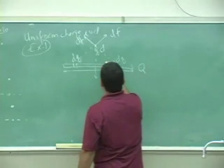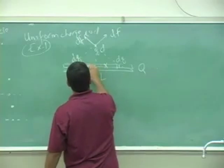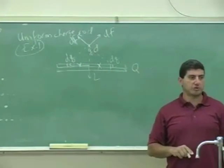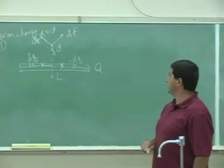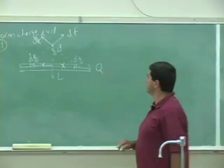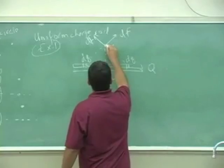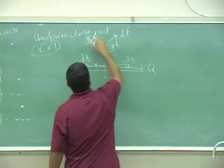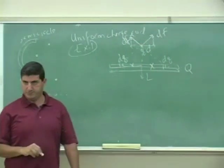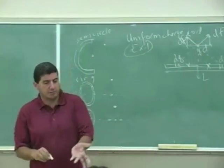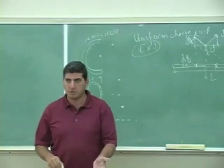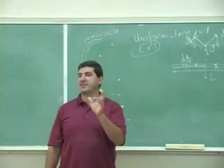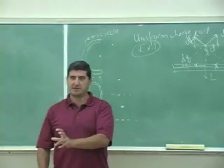Now if this distance is x and if this distance is also x, if they're equidistant, what do I know about the x component of df and the x component of the other df? Since it's symmetrical, the x components are going to be equal and the y components are going to be equal. The x components are going to cancel each other. That's why the integration is doable because you have symmetry.